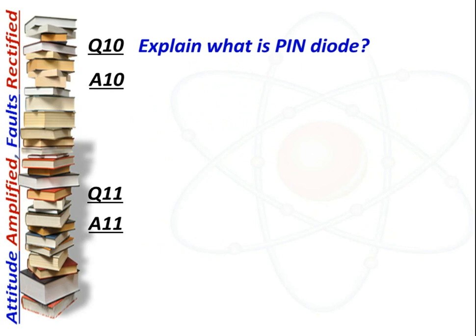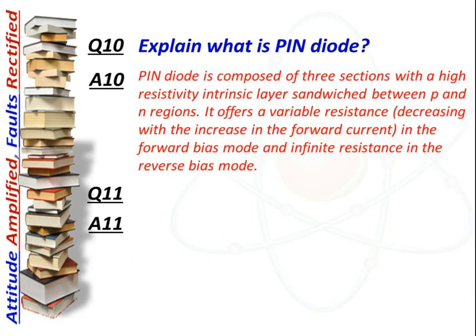Next question: What is a PIN diode? Answer: A PIN diode is composed of three sections with a high resistivity intrinsic layer sandwiched between p and n regions. It offers variable resistance decreasing with increase in forward current, and an infinite resistance in reverse bias mode.